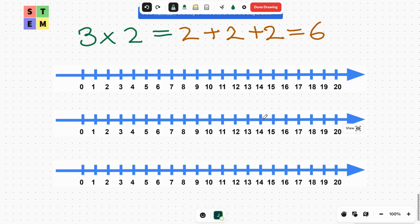We've already learned from other lessons that 3 × 2 equals 2 + 2 + 2, which equals 6. But in this lesson, we are going to take a look at how we can present this on the number line. How can we represent 3 × 2?